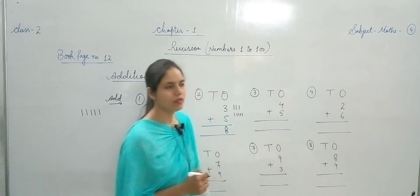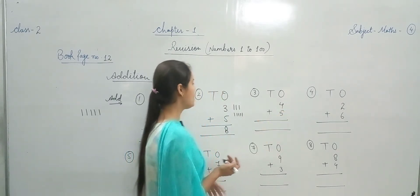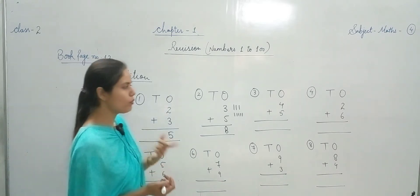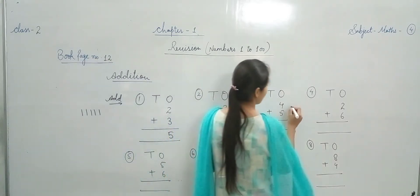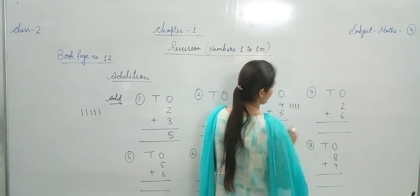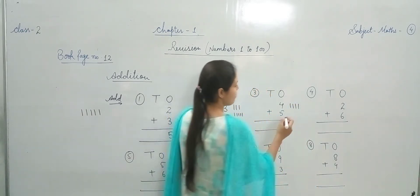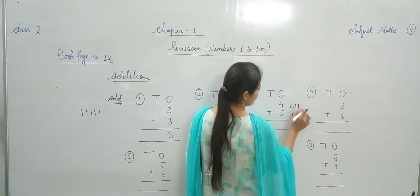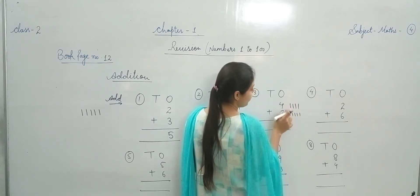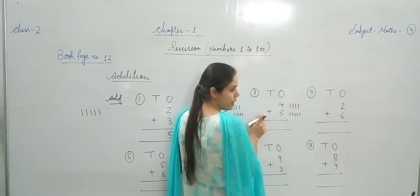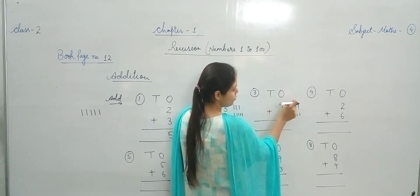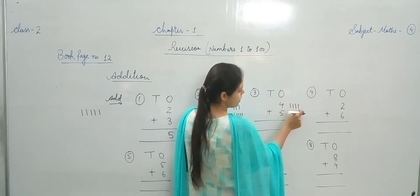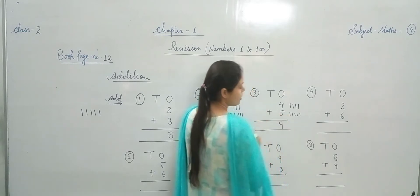Next — 4 plus 5. Fingers counting या lines की help से addition कर सकते हैं — जो आपको easy हो। 4 lines draw करेंगे, फिर 5 lines draw करेंगे। अब 4 lines में 5 lines plus करना है — 1, 2, 3, 4, 5, 6, 7, 8, 9. Answer is 9.